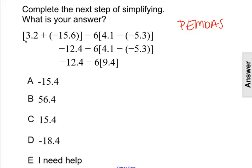First we simplified 3.2 plus negative 15.6, and that gave us negative 12.4. Then secondly, we did the grouping of 4.1 minus negative 5.3, and that gave us 9.4.